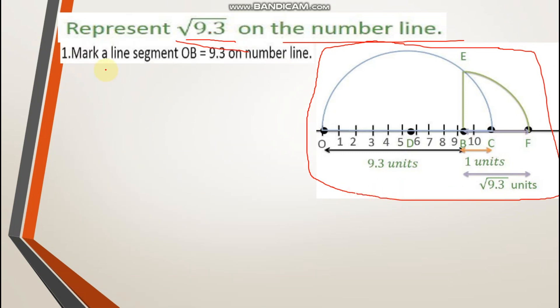Let's see the first step. Mark a line segment OB equals 9.3 on number line. You have to mark using your scale, OB as 9.3. This is your O to B, 9.3.